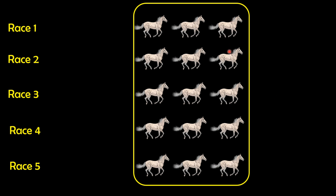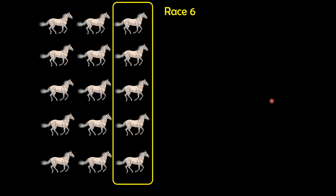We have the first-place finishers from each of the five races, but we don't know which one is the overall fastest. So we do race number six among these five group winners. The horse that wins this race is clearly the overall fastest, because it was fastest in its group and then fastest among all group winners — that horse in the top right corner is the overall first.